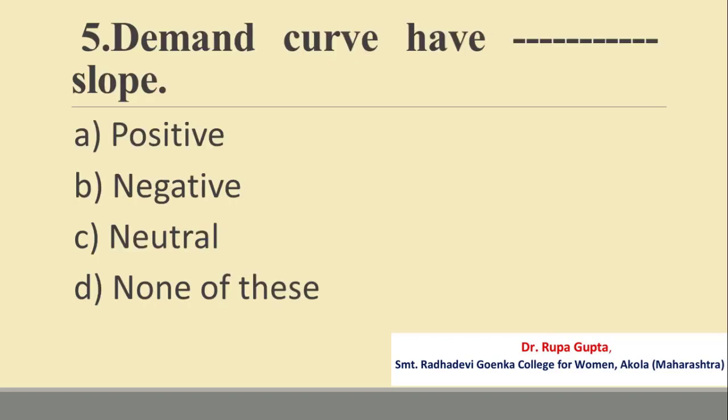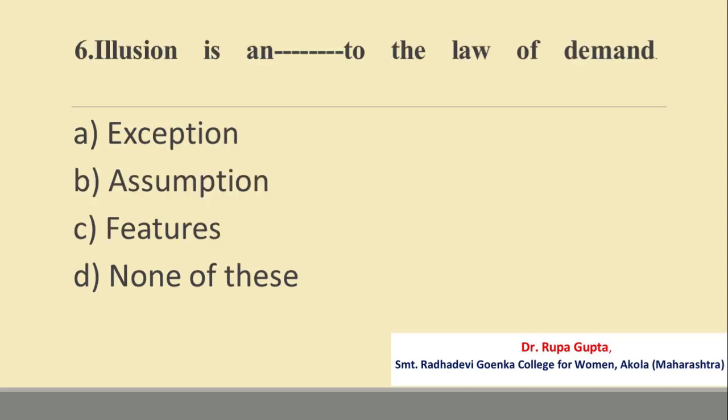Question number 5. Demand curves have a dash slope. Options are: A. Positive, B. Negative, C. Neutral, D. None of these. The answer is B, Negative.